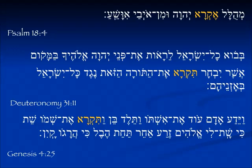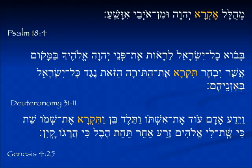From Psalm 18:4: 'Mehulal Ekra Yehovah' — I will call. The word 'mehulal' — do you remember this form? It starts with Mem, which means it's a participle form. The root is He-Lamed-Lamed, which means 'to praise,' and the U tells you it's a passive form — it's actually a Pu'al form meaning 'he is being praised' or, as it's translated, 'he is worthy of praise.'